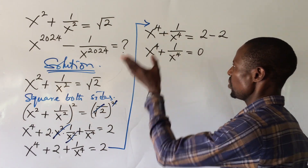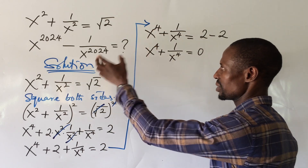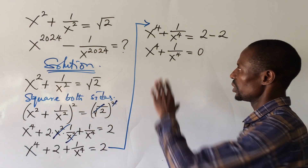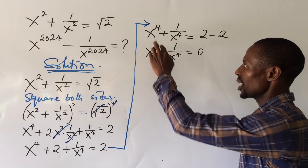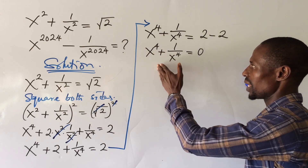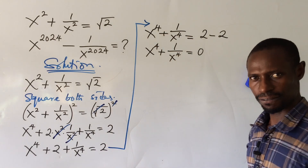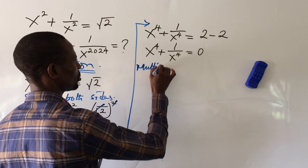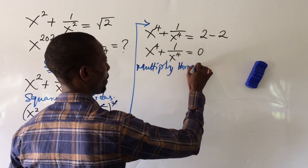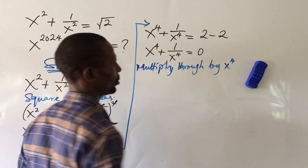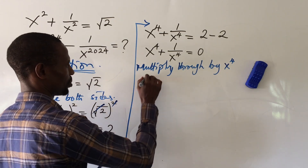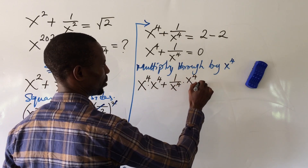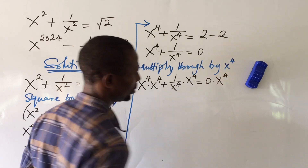Now we think about how to work with this expression in relation to the power 2024. The best approach is to multiply both sides of the equation by s to the power of 4. So we have: s to the power of 4 times s to the power of 4, plus 1 over s to the power of 4 times s to the power of 4, equal to 0 times s to the power of 4.